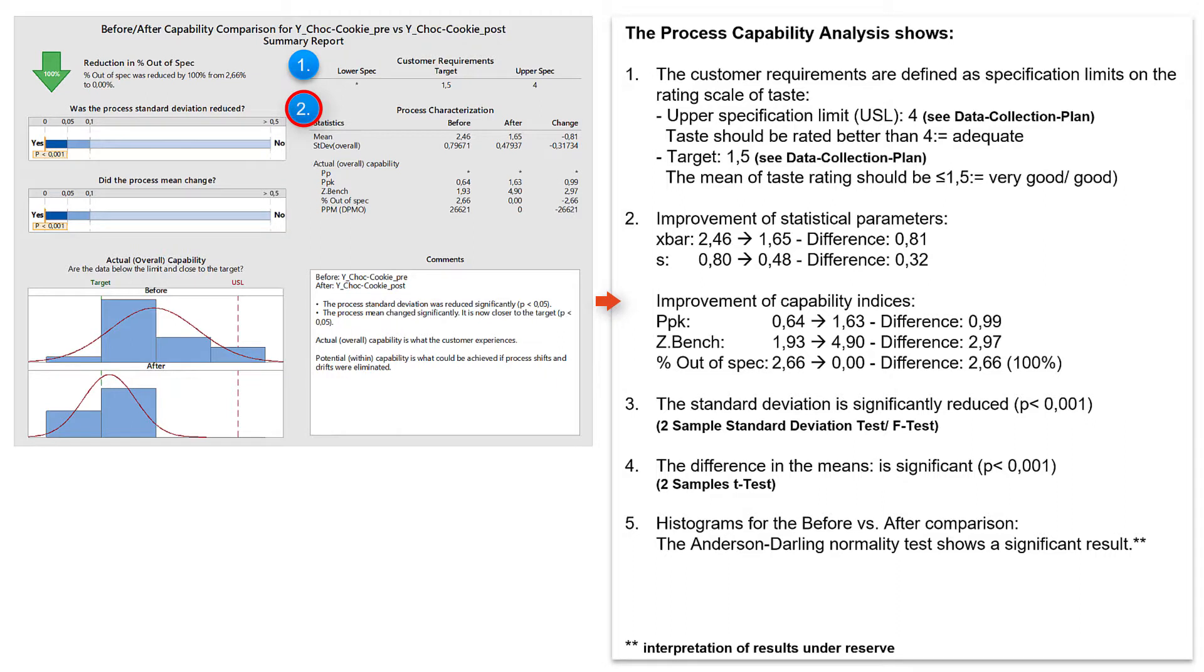The statistical parameters show improvements in the mean and standard deviations. In relation to the target and specification limits, this also leads to an improvement in the capability indices, PPK and ZBench, our sigma level, which increased from 1.93 to 4.90. The corresponding percentage outside the specification dropped from 2.66 to 0, i.e. a difference of 2.66, which is indicated as a 100% reduction.